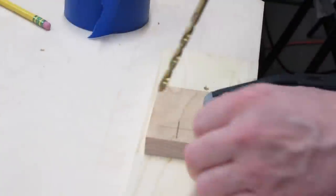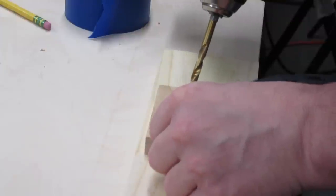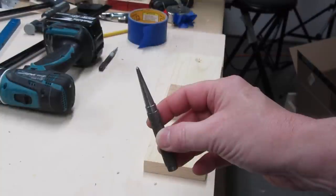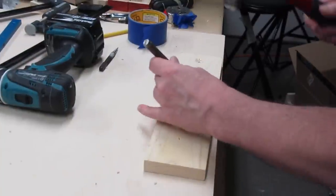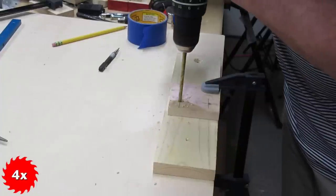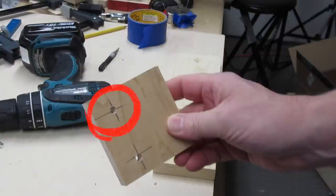In some circumstances, it can be hard to get this kind of bit started in the right location because the bit may want to skate around the board. See how I missed the center of the crosshairs? When this happens, mark the wood with something like this punch, or a nail, or drill a pilot hole first. Pretty close to the middle of the crosshairs.